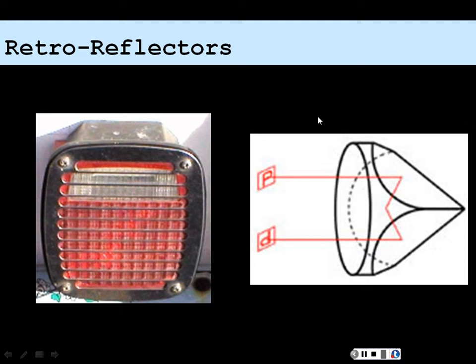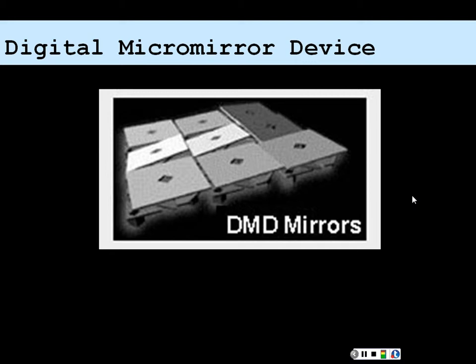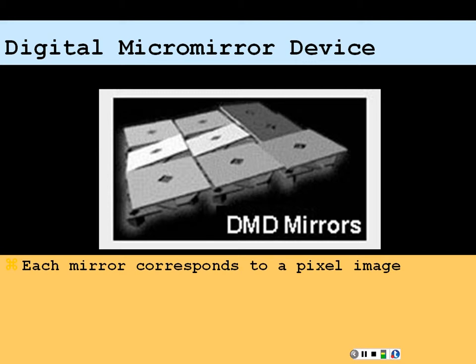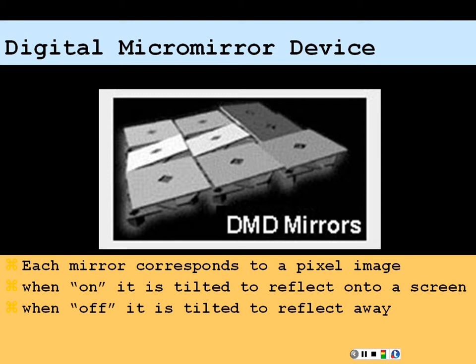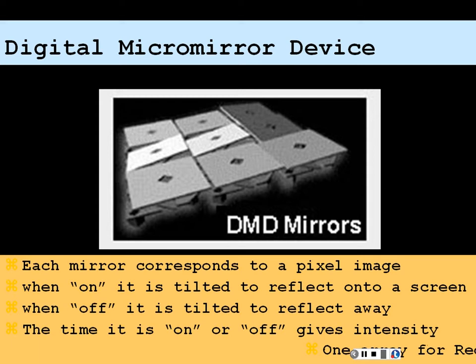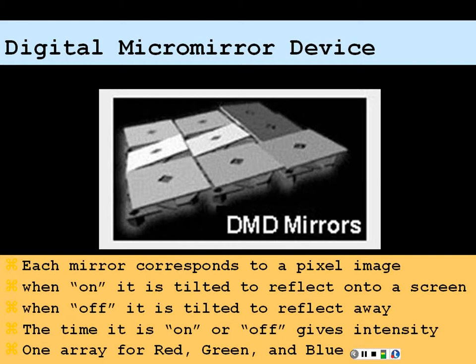Another application of reflectors is DMD mirrors, used for projection in a movie theater. Each mirror of this DMD design corresponds to a pixel in the image you're trying to create. When it is on, it is tilted to reflect onto the screen; when it's off, it is tilted to reflect away using specular reflection. The time it's on or off gives you intensity. There's one array for red, one for green, and one for blue, so you can create a color image of pixelated pixels on your screen using reflection from all these little mirrors — a nice way to recreate an image onto a large external screen.